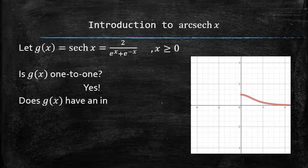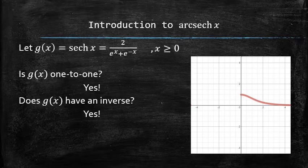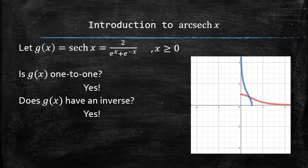Does this function have an inverse? The answer is also yes, because all one-to-one functions have inverse functions. And here's what it looks like. We call this function the hyperbolic arcsecant.